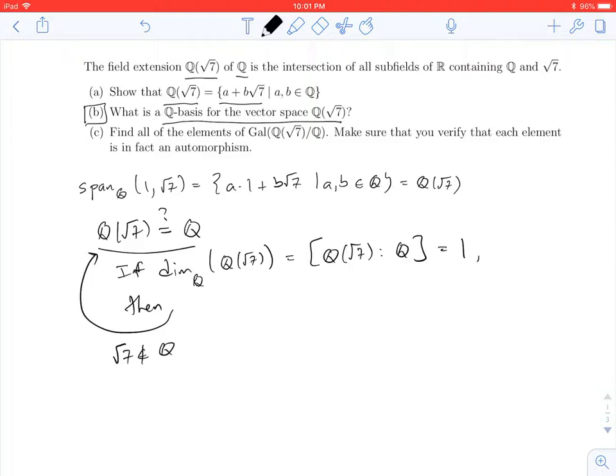And if it's 2, and we already have a spanning list of length 2, that actually must be a basis. So since we now know that Q adjoin the square root of 7 must have dimension 2, or degree 2 over Q, that implies that {1, √7} is a Q-basis.